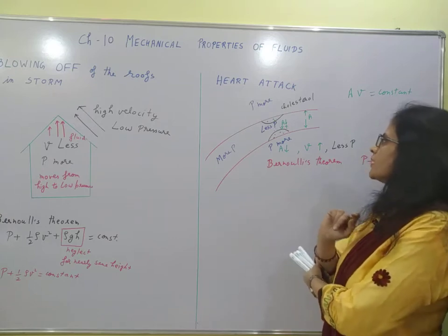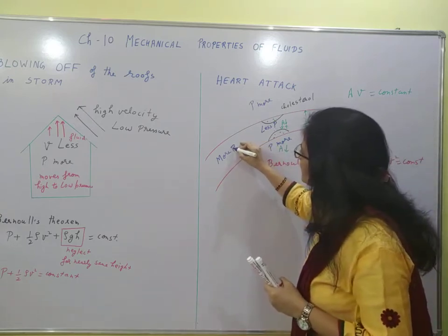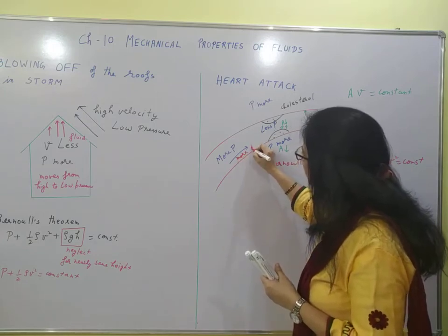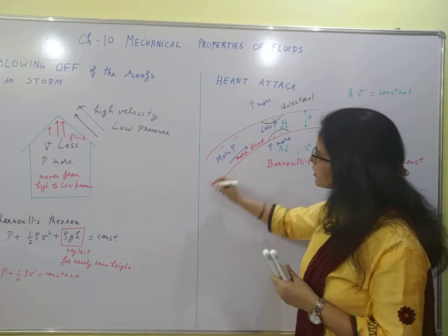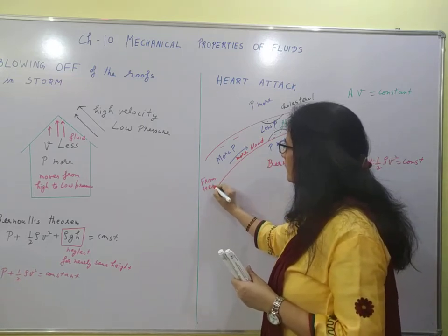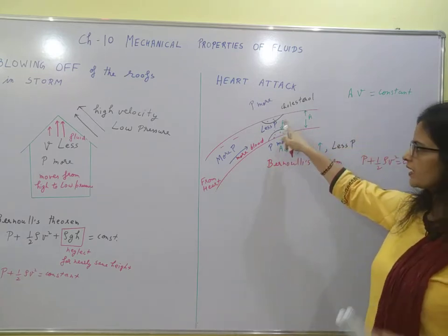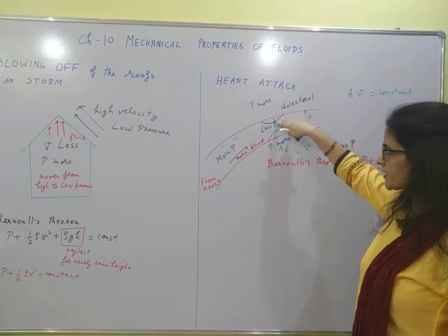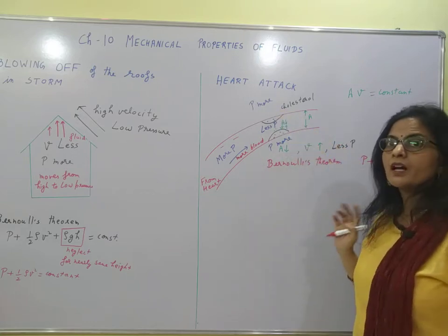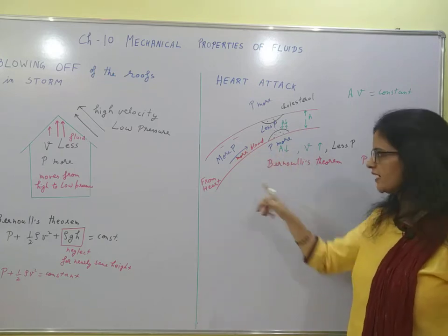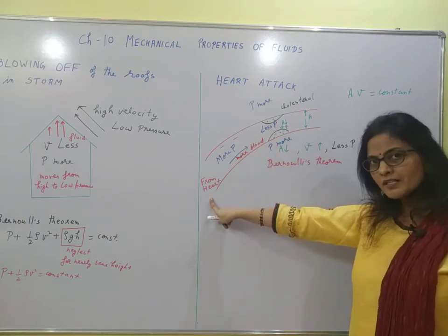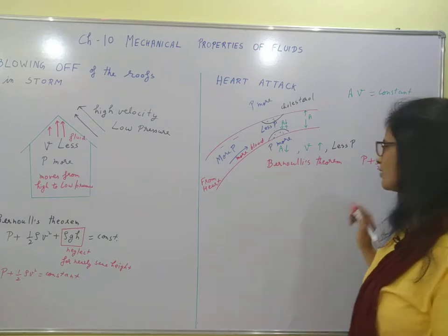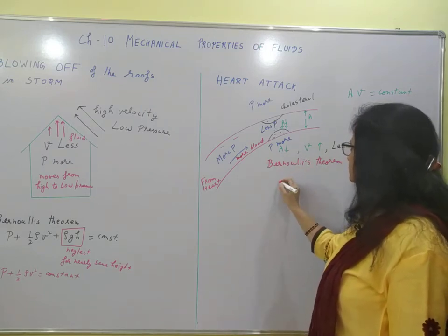Because of the higher outside pressure, the artery will collapse — the opening becomes even smaller. Due to this, more blood flows toward this artery from the heart side. As the cross section decreases further due to sideways pressure, there is even more inflow of blood, creating additional pressure on the heart, which results in the heart collapsing.